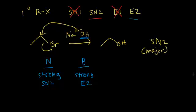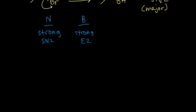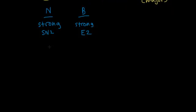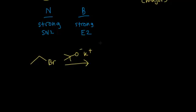You might get some E2 product as a minor product. Let's do another one here with the same reactant, bromoethane, reacting with potassium tert-butoxide. Potassium tert-butoxide looks like K+ and then we have our alkoxide anion. First, identify your nucleophile — it is going to be our alkoxide. Is that nucleophile going to be strong or weak?